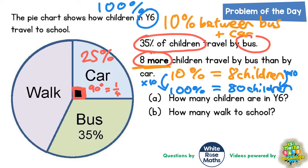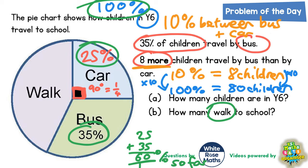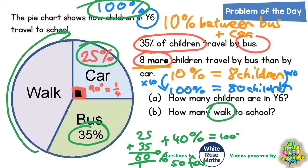For the second part of the question — how many walk to school — we've already had 25% coming by car and 35% coming by bus. The whole thing adds up to 100%, so 25 plus 35: 5 and 5 is 10, put the 0 and carry the 1, 2 plus 3 is 5, plus the 1 is 6. So that's 60% accounted for. The remaining part — the children who walk — must make 60% add up to 100%, and 60 plus 40 equals 100%, so walking must be worth 40%.